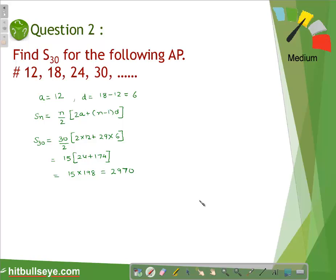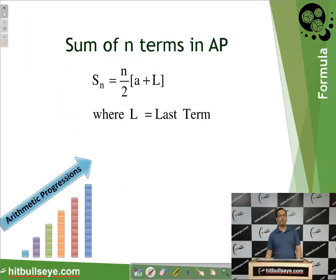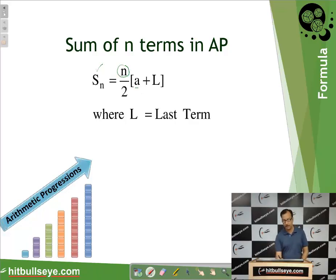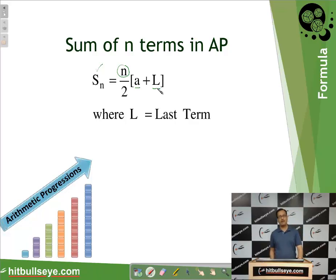There is another formula for the sum of n terms of an arithmetic progression, applicable when we know the last term. This formula is: Sn = n/2 × (a + l), where a is the first term and l is the last term. Let us take an example to understand this formula.